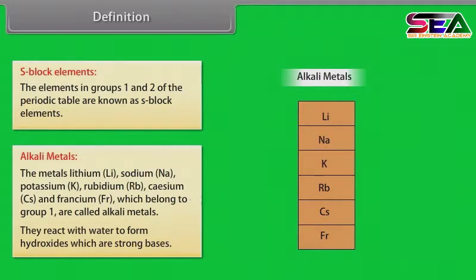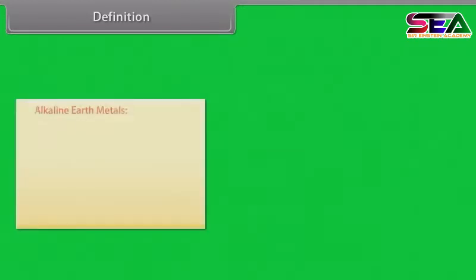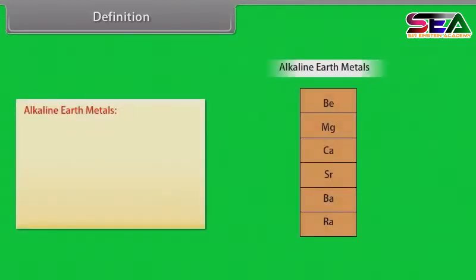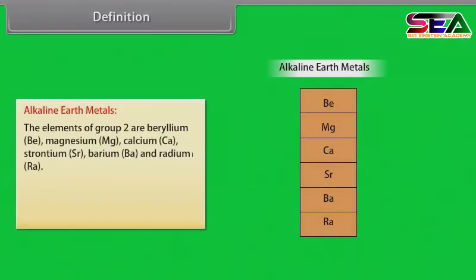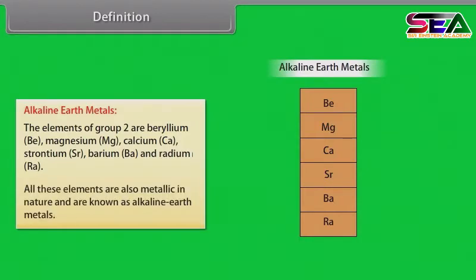The elements of group 2 are beryllium, magnesium, calcium, strontium, barium and radium. All these elements are also metallic in nature and are known as alkaline earth metals.